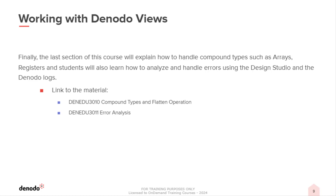In the final section of the course, we will learn about compound types that can be used in the Denodo platform and about the flatten operation. Ultimately, we will learn how to troubleshoot different kinds of issues which developers may encounter during the development phase. The modules covered include: Compound types and flatten operation, where we will see how registers and arrays can be created and flattened; and Error analysis, where we will discuss log configuration, how to read logs, how to use the execution trace, and some common issues that may occur during the development of different views.